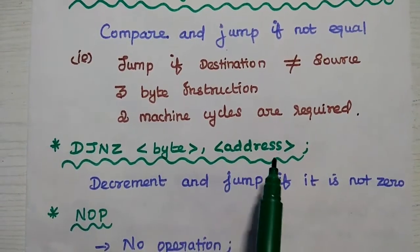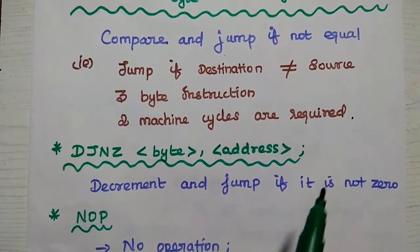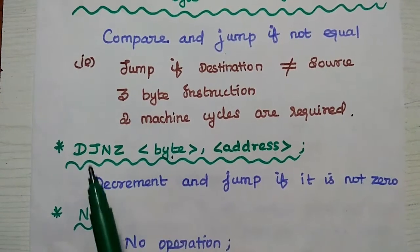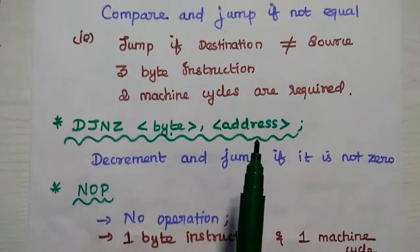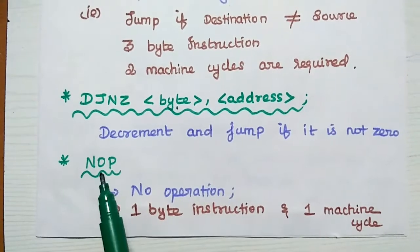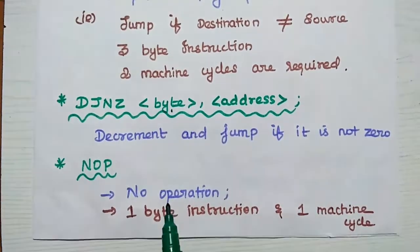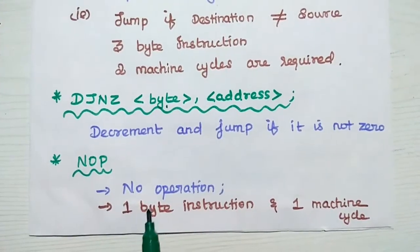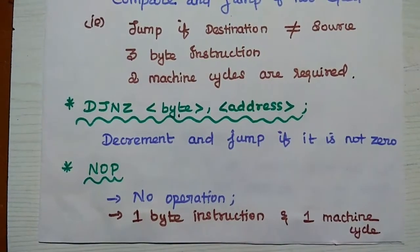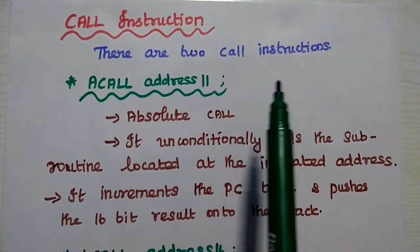DJNZ byte, address means decrement the given byte and jump if it is not 0. We decrement the given byte; if it is not equal to 0, jump to the new address. It is also a 3-byte instruction requiring two machine cycles. The last instruction is NOP, which means no operation. At that time the microcontroller is in an idle state. It is a 1-byte instruction requiring one machine cycle to execute.